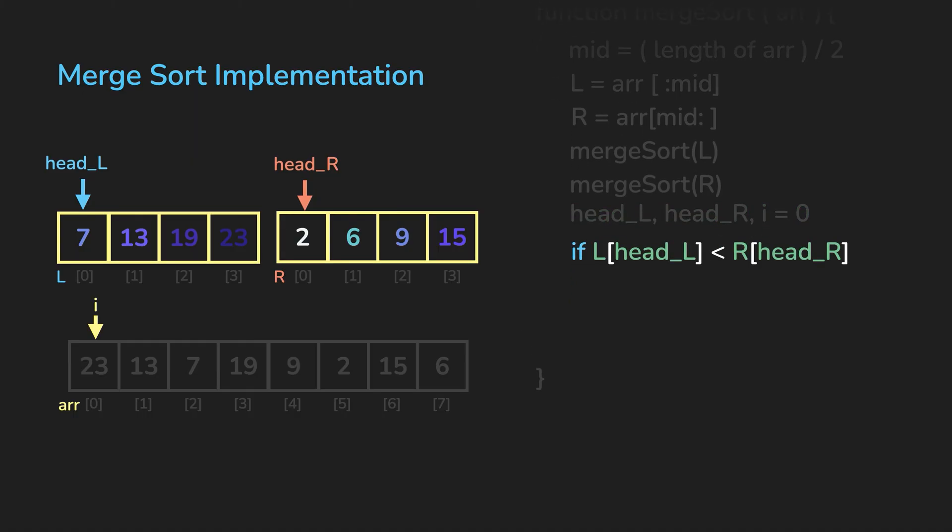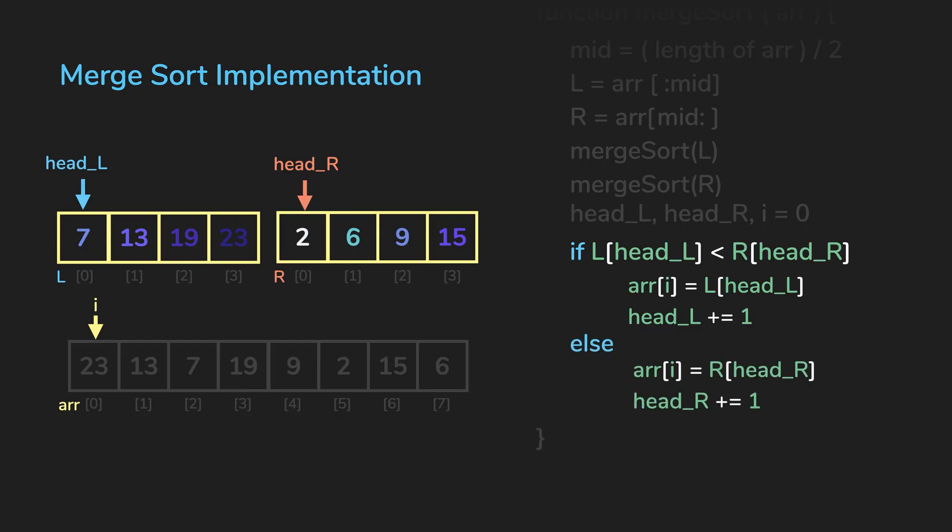Now we do the comparison between head_L and head_R. If head_L is smaller, then we'll put that element in array on index i and increment head_L. If head_L is not smaller, then we do the same thing but with head_R.